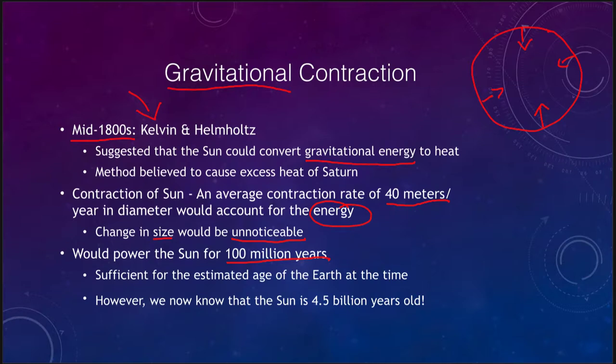This would be sufficient to power the Sun for 100 million years just by this gravitational contraction. That was great at the time, it was larger than the estimated age of the Earth. Now we know that the Earth is four and a half billion years old and this is not sufficient. While gravitational contraction did likely play a part in the early history of the Sun, it is not how the Sun produces its energy today.